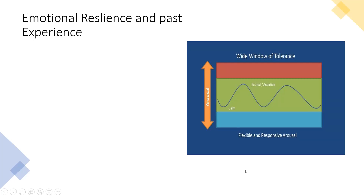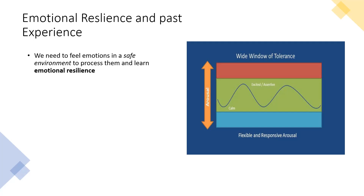This diagram shows emotional resilience and how it relates to past experience. We need to feel emotions in a safe environment to process them and learn emotional resilience — that lovely blue wavy line that goes up and down in a steady way, from calm through to excited or assertive. But most of us who've had past experiences where it wasn't safe to feel don't respond like this — we tend to veer from hopeless and depressed up into hyper-arousal, usually anxious and irritable.